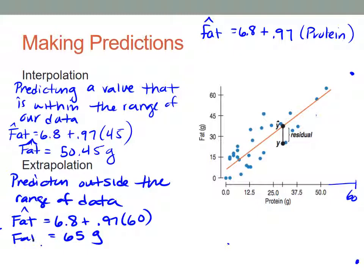We predict that when protein is 60 grams, that fat will be 65 grams. And we can kind of see that on our graph over here. That makes sense when we actually look at this on our graph.